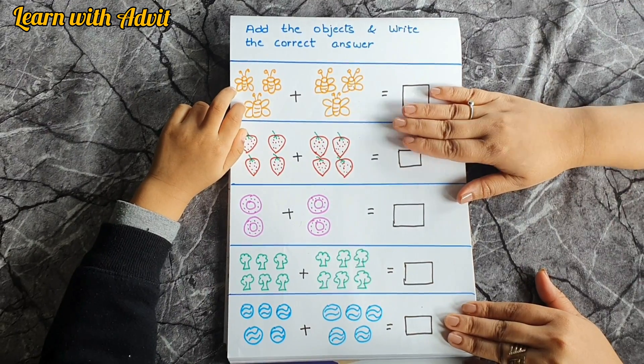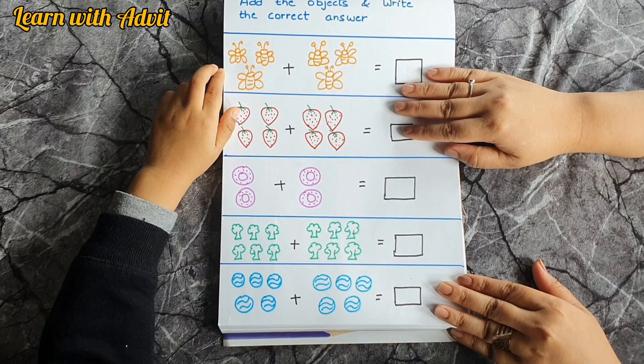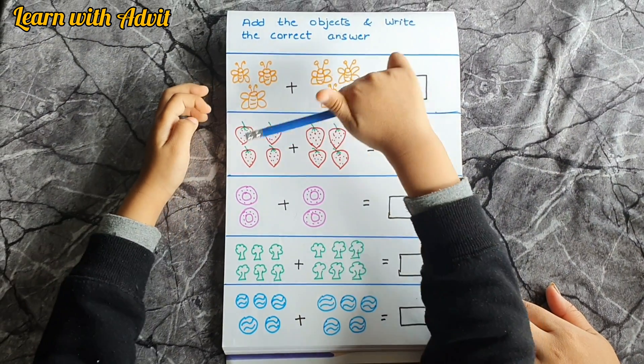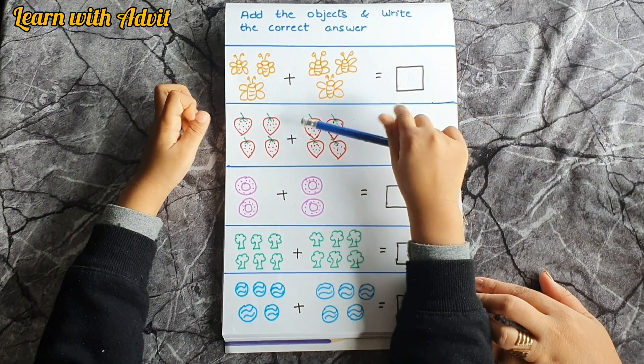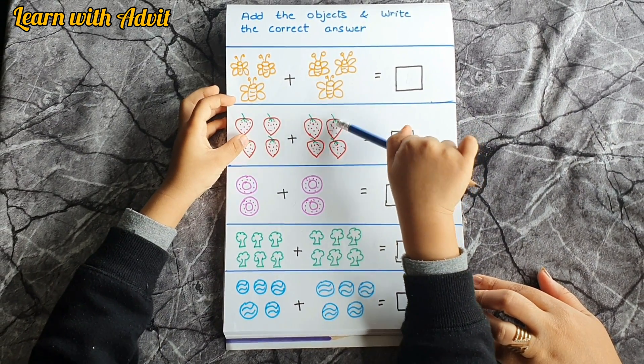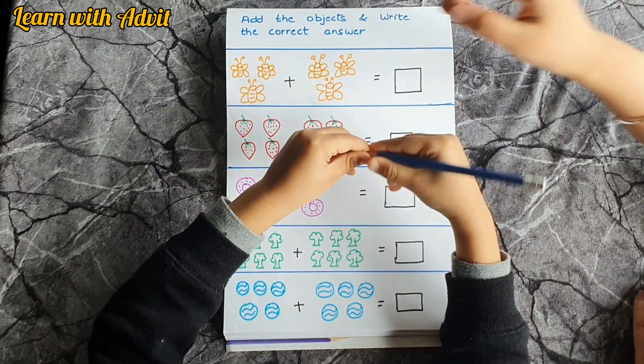That's what you have to do: count the objects and write the answer. Count how many strawberries are there. One, two, three, four, five, six, seven, eight. Okay, good.